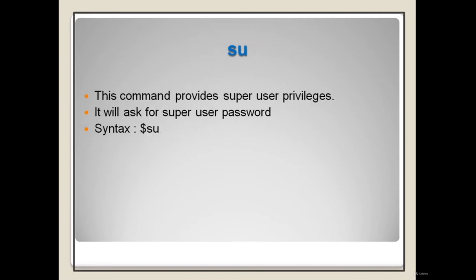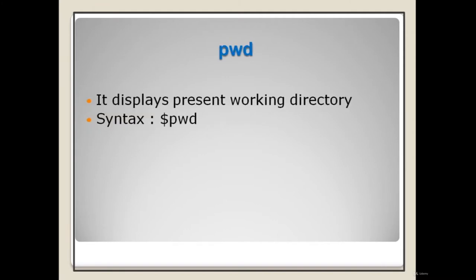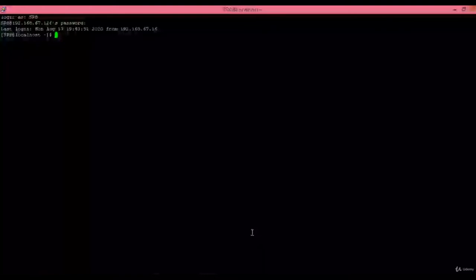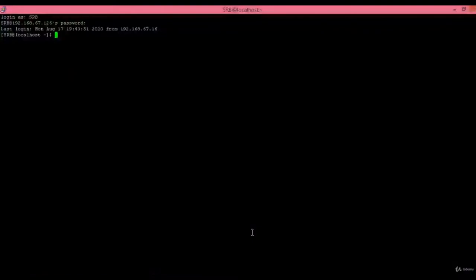'whoami' displays the details of the currently working user. Syntax is: who am i. The 'login' command is used to switch from one user to another. 'passwd' is used to set the password of the current user — it asks for a new password and confirmation. Syntax is: passwd. The 'su' command provides super user privileges and asks for the super user password. Syntax is: su. The 'pwd' command displays the present working directory.